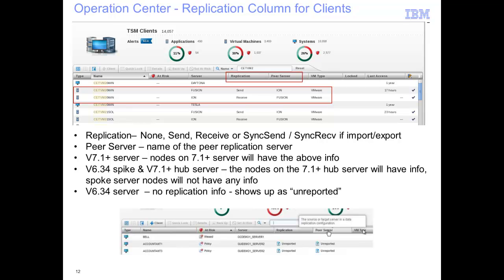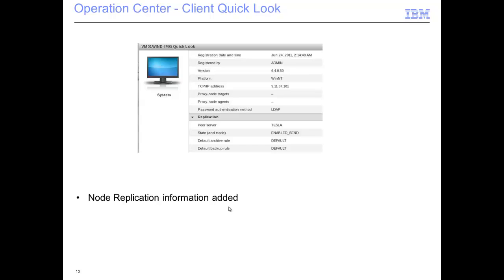This is a screenshot of the Operations Center showing what replication looks like in version 7.1 and higher. It shows who the primary server is — if it's sending data, that means it's the primary server — and who it's sending data to, which is the peer server. You'll see that the two TSM client names are the same, because when node replication occurs, a client name exactly the same as on the original server is created on the secondary target server. You can see the second instance of the node name belongs to the target server and is in a received state. Drilling into the client quick look, you can see replication information: who this client is replicating to, who the peer server is, and if it's enabled to send data or not.